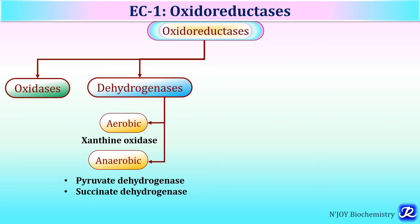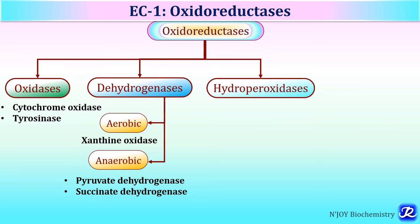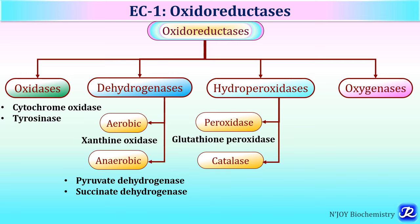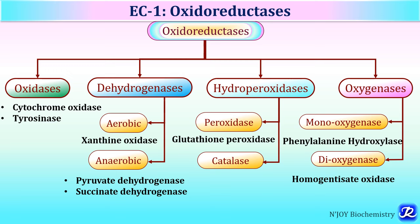Oxidases catalyze removal of hydrogen from substrate to form water or hydrogen peroxide, with oxygen as the hydrogen acceptor; examples include cytochrome oxidase and tyrosinase. Hydroperoxidases use hydrogen peroxide or organic peroxide as substrate; examples include peroxidases, catalases, and glutathione peroxidase. Oxygenases catalyze direct transfer and incorporation of oxygen into substrate, including monooxygenases (e.g., phenylalanine hydroxylase) and dioxygenases (e.g., homogentisate oxidase).